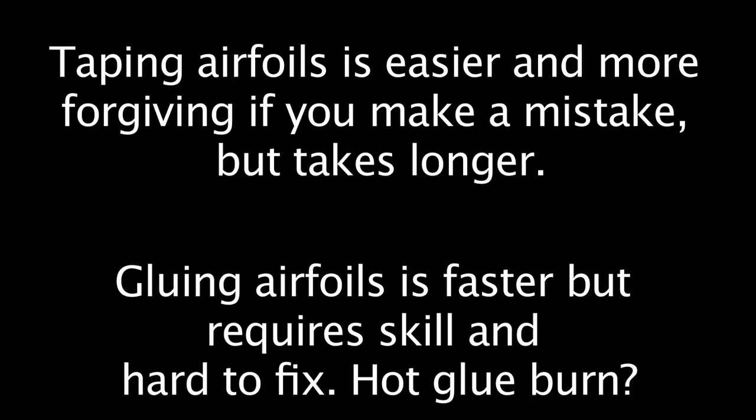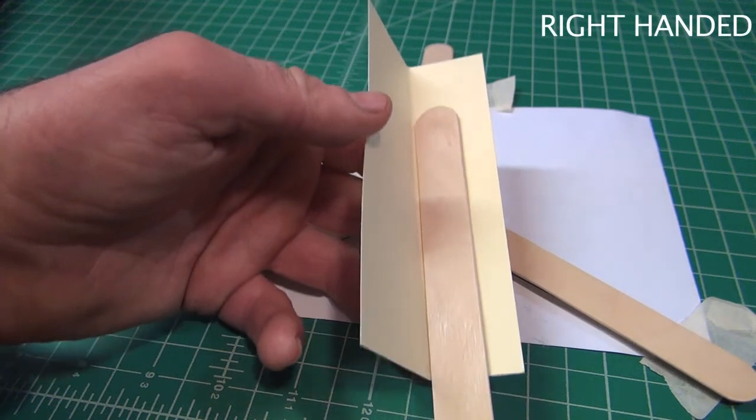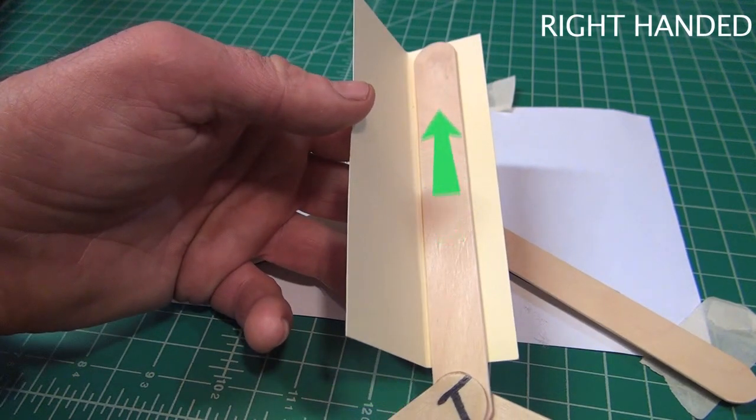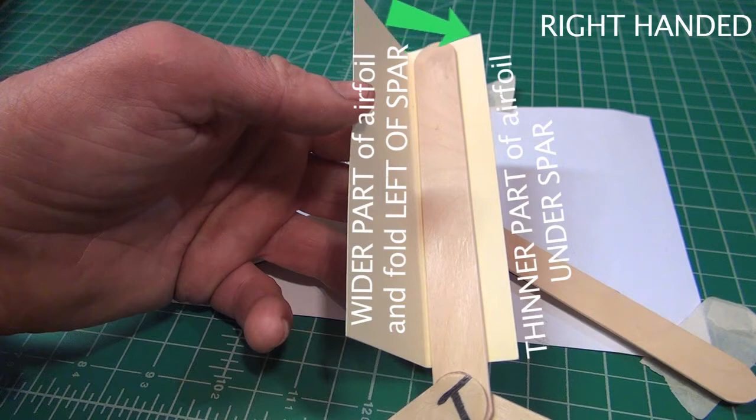First I'll show taping on the airfoils. Then I'll show gluing them on, which is much faster but takes more skill, and it's hard to fix if you make a mistake. For a right-handed boomerang, make sure the T is up. Hold the boomerang so a spar points away from you. Line up the end of the tongue depressor with the end of the paper.